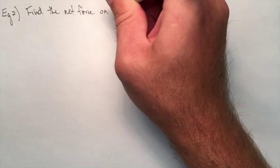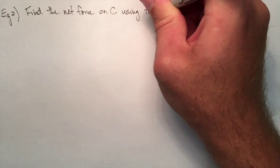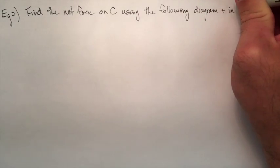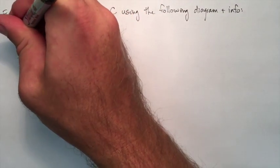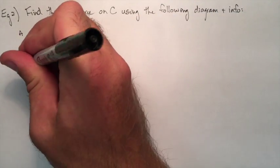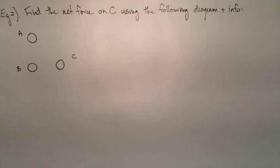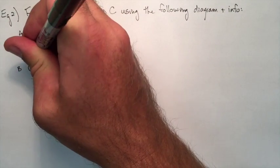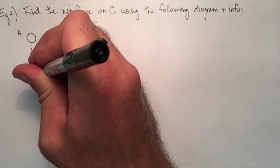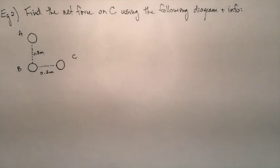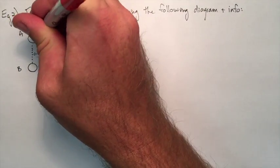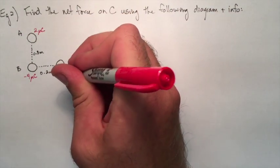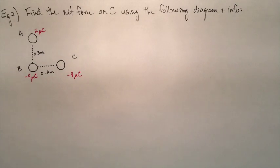Second example here, it's not one-dimensional anymore. Let's say we have three charges on the corner of an equilateral triangle. So according to this diagram, we have A, B, and C, B being at the right angle. The distance between A and B is going to be 0.3 meters. The distance between B and C is going to be 0.2 meters. And the charges on each of these objects, A will be 2 microcoulombs, B will be negative 4 microcoulombs, and C will be negative 8 microcoulombs.